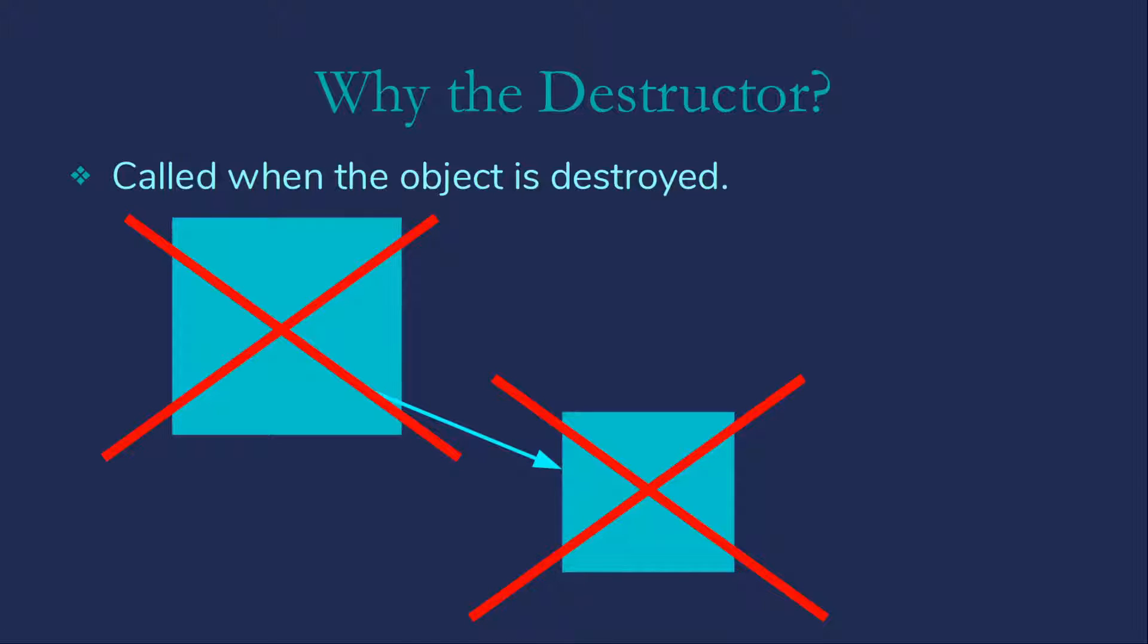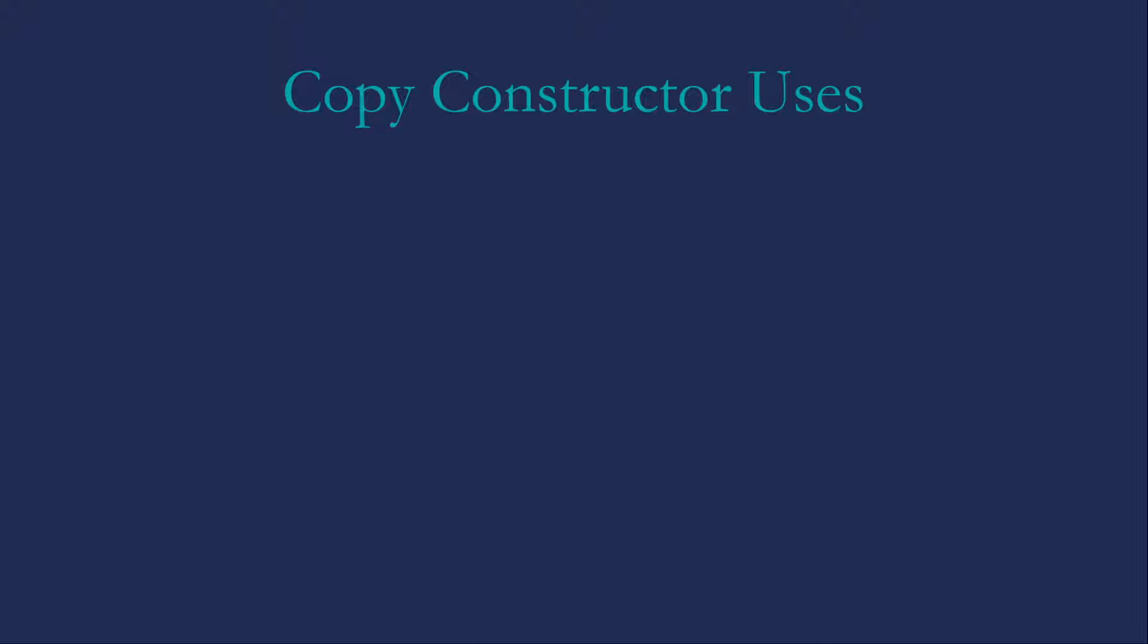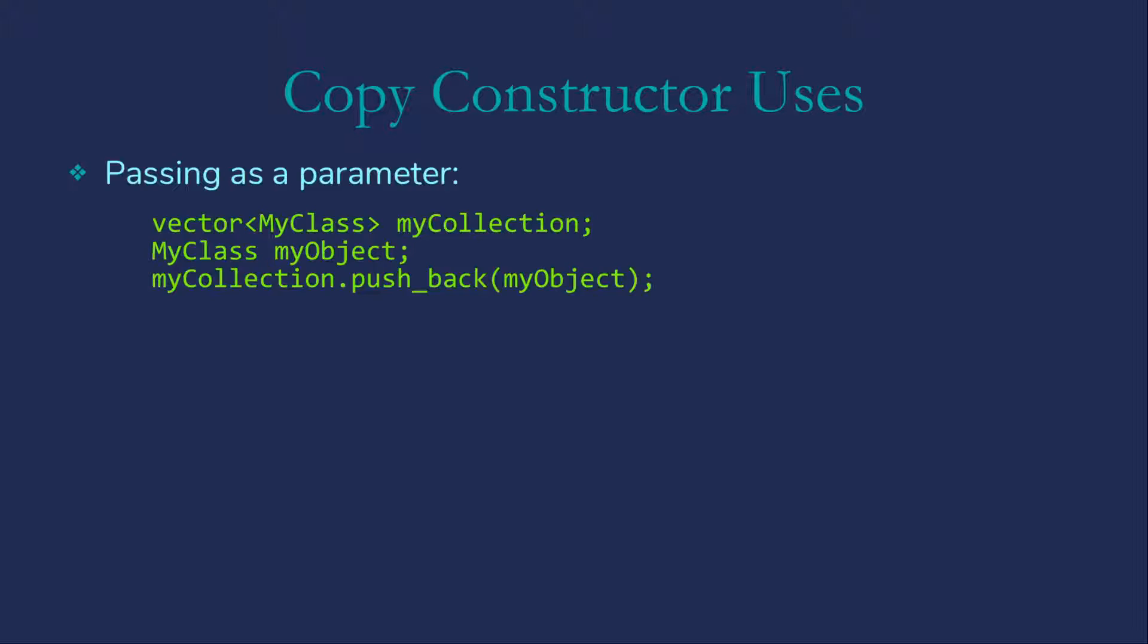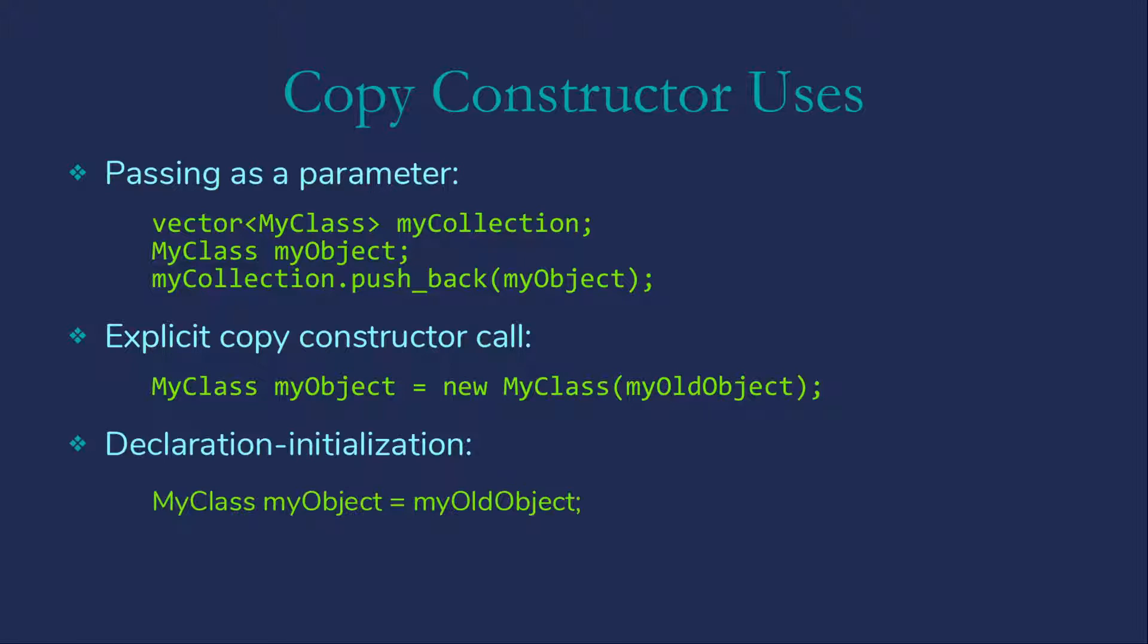Next, we have the copy constructor. This is called whenever we create one of our objects based on another object. This might happen because we've passed the object as a parameter, or we've called the copy constructor explicitly, or we've initialized the object at object declaration. This would be an example where the copy constructor is called because my object has just been created and the assignment is an initialization.